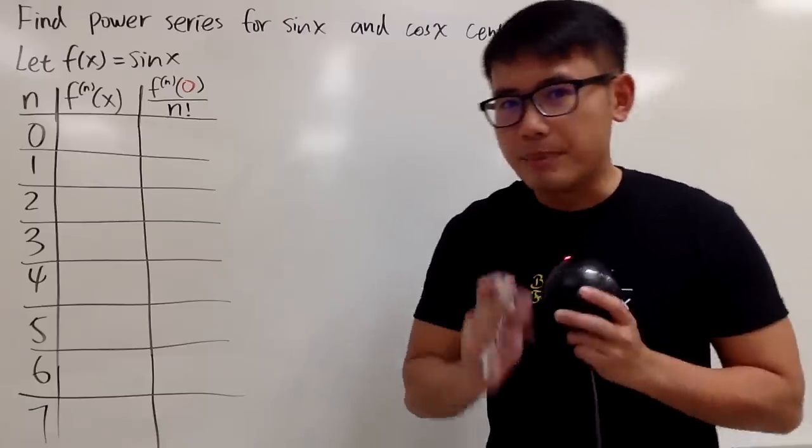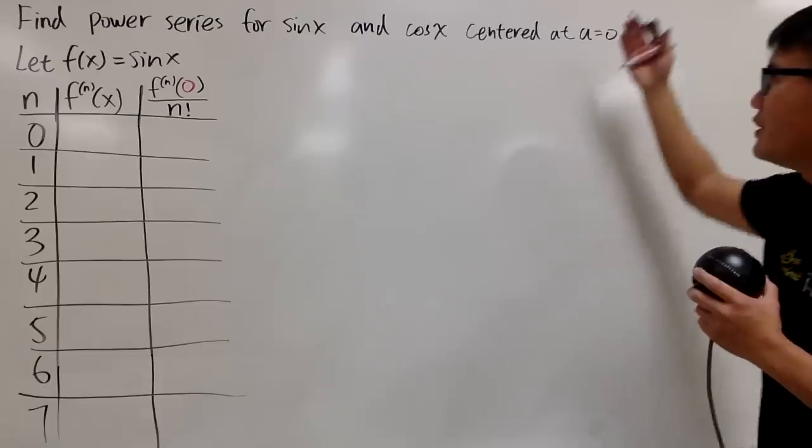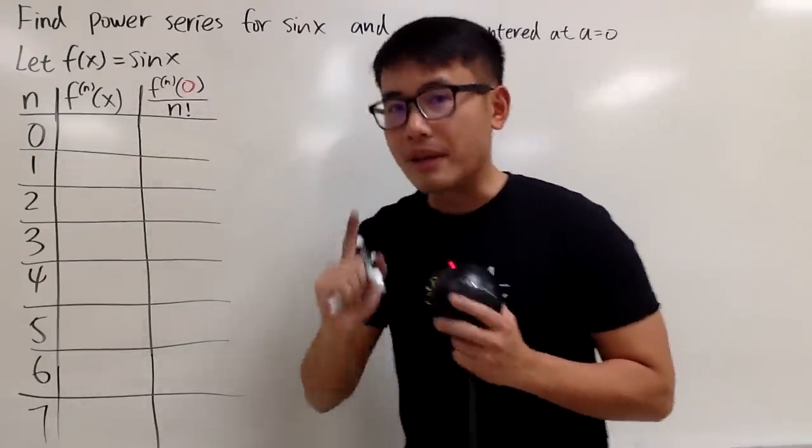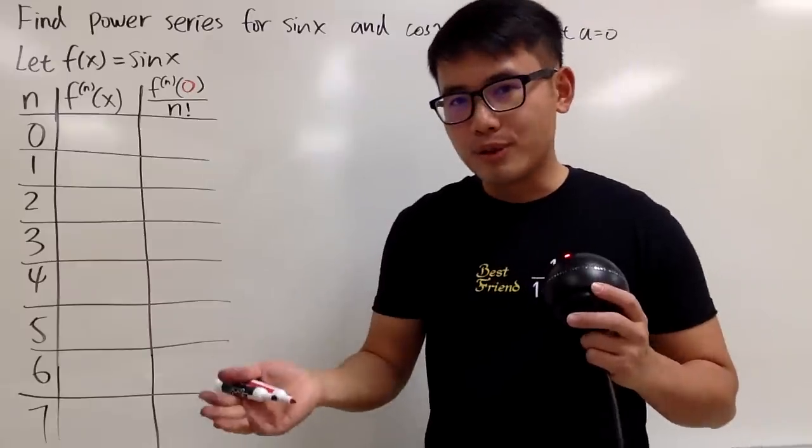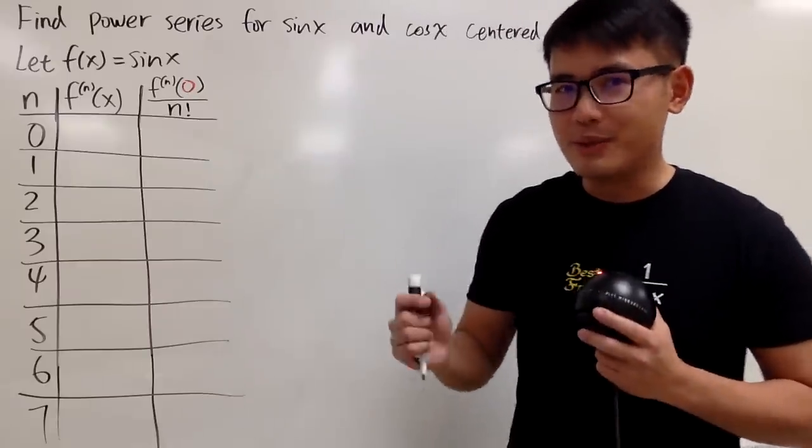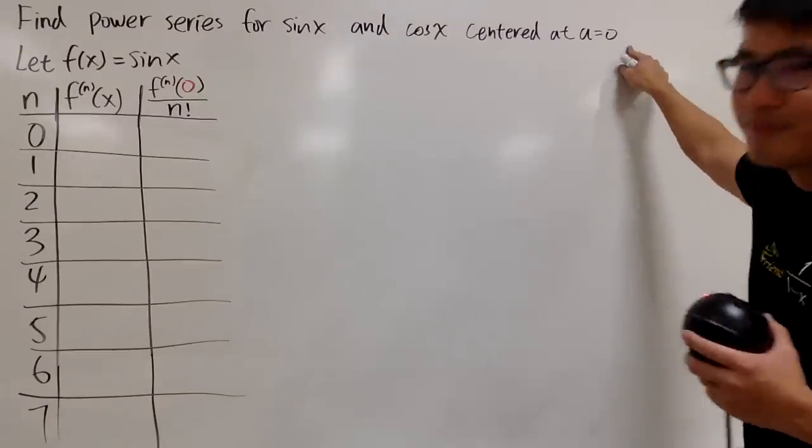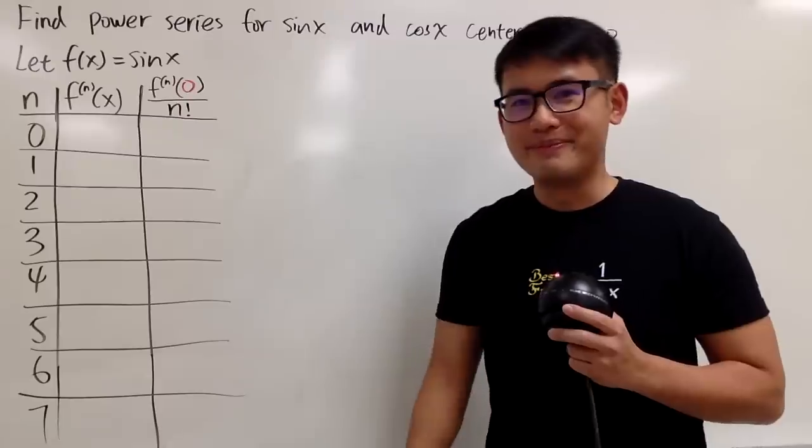Okay, in this video, I'll show you how to find the power series expansion for sin x and cos x centered at 0. Some people call this the Taylor series because we're going to use the Taylor formula. And some people also call this the Maclaurin series because we have a Taylor series centered at 0. But all in all, they are just power series.